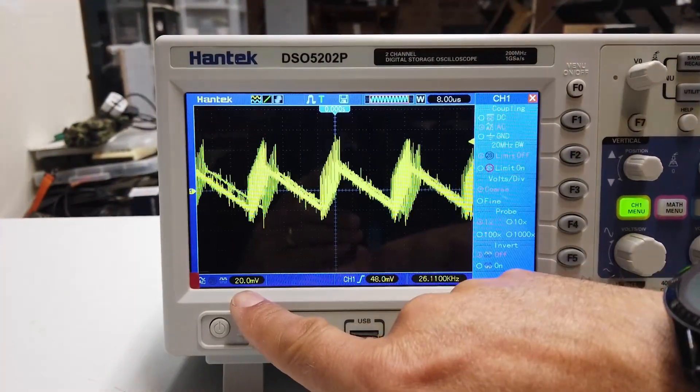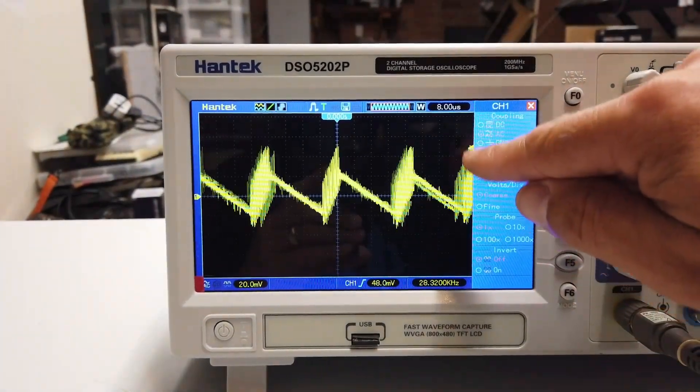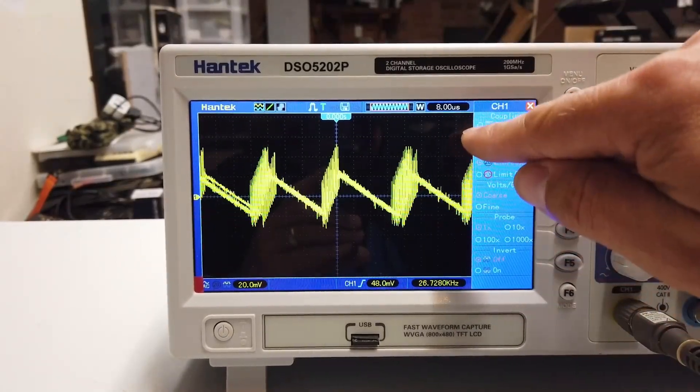Waveforms are just a little bit noisy. We're currently set to 20 millivolts per division and we have one, two, three, maybe four, so almost 80 millivolts.